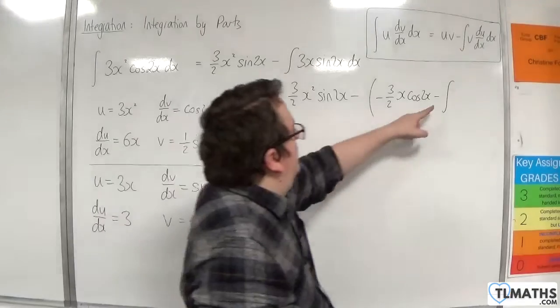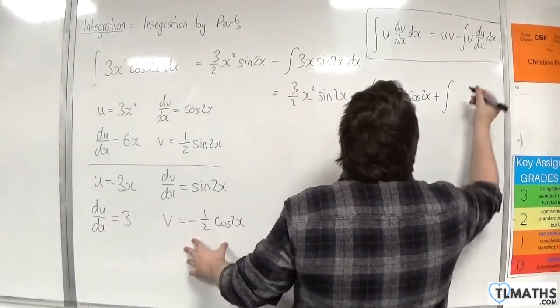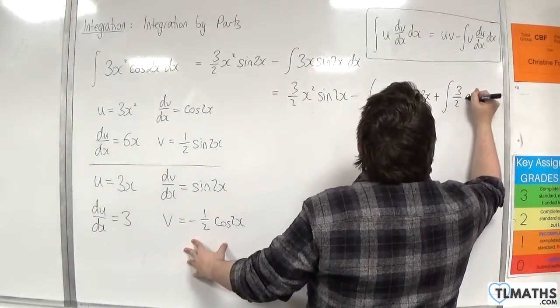Now because of that minus sign and that minus sign there, I'm going to change it to a plus. And we'll have 3 halves cosine 2x.